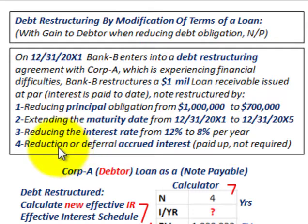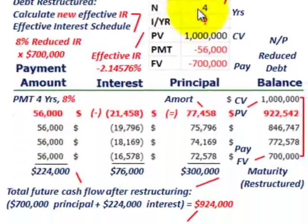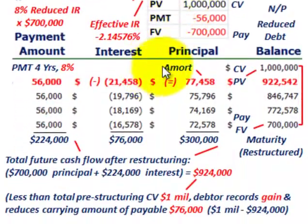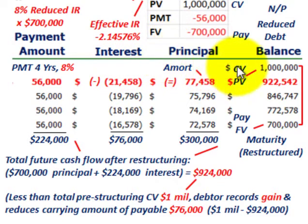Generally you'd also have a reduction or deferral of accrued interest, but in this example the interest is paid up to date, so that's not required. Normally with these restructuring agreements you're going to have to come up with a new amortization schedule. We're going to be looking at it in two different ways here.